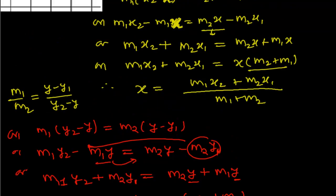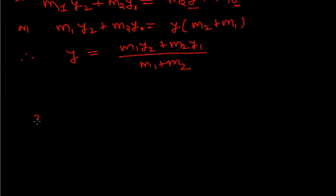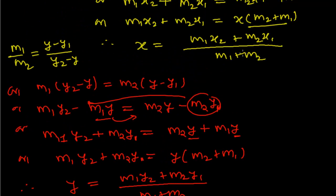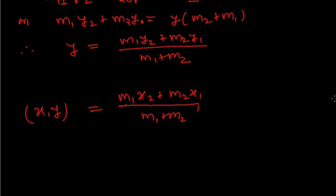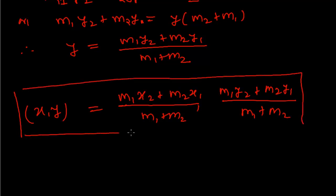So we got the value of the intersecting point. The section formula is: the coordinates of point P (x, y) are given by x = (m1·x2 + m2·x1)/(m1 + m2) and y = (m1·y2 + m2·y1)/(m1 + m2). This is called the section formula.